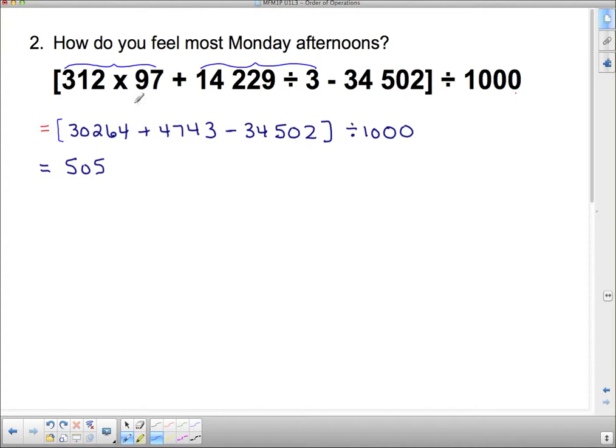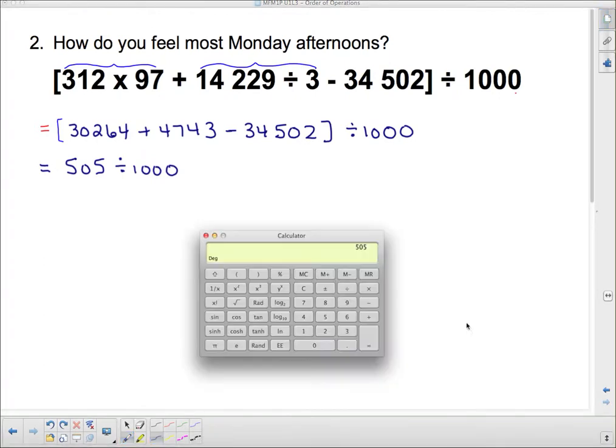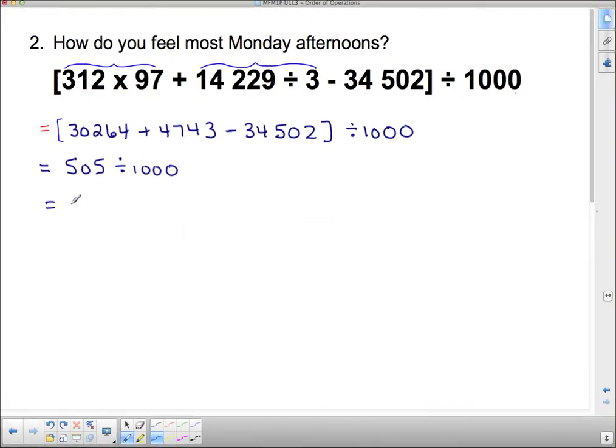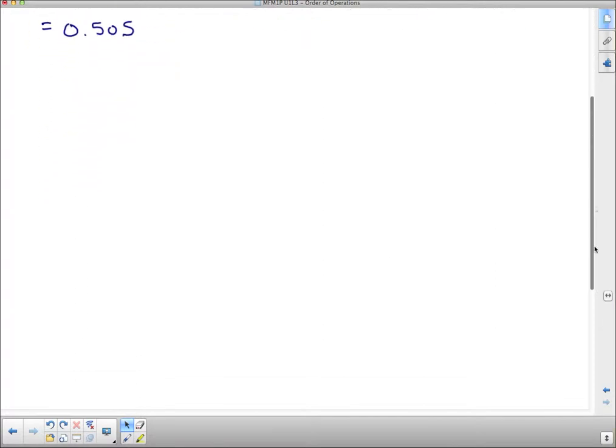And now, that's the answer for this big bracket. So, now, we can divide by 1,000. And when I divide by 1,000, I get 0.505. So, how do you feel most Monday afternoons? Let's flip this over. So-so. You feel so-so on Monday afternoons. So, those are calculator riddles.